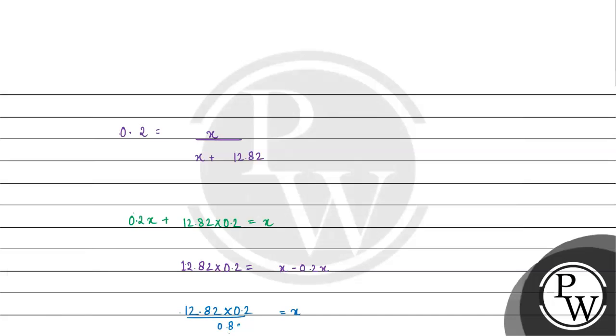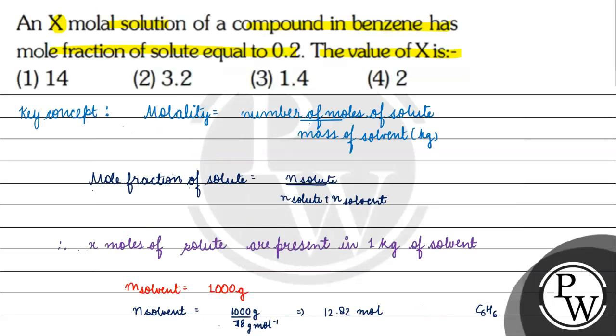This gives us 12.82 divided by 4. The value of X comes out to be 3.205. Coming back to the question, the correct answer for this question will be option 2. I hope you understood it well. Thank you and all the best.